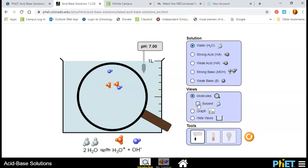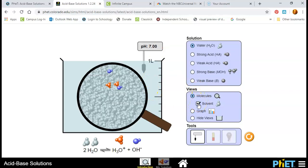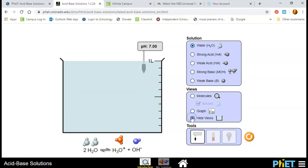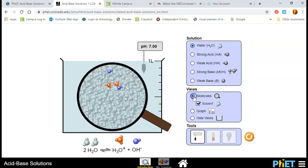Some of the clicks here, if I turn solvent on, that's just going to show all the background water molecules, just to remind you that this is almost 100% water. There's just a few ions that have broken apart in there. I can also look at a graph of how much of everything there is, and I can hide everything if I want to do that.